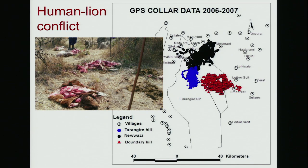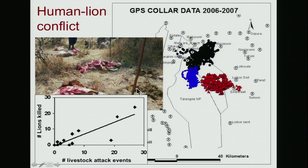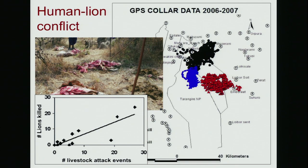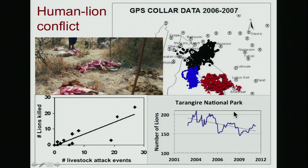When the Maasai lose their livestock to lions, they retaliate. Around Tarangiri, in some villages, lions have attacked livestock up to 30 times and nearly 30 lions were killed in retaliation. Where the lions kill more livestock, more lions are killed in retaliation. This edge effect is very profoundly important for the health of the lion population. Studies in the park show the population has been declining over the last 10 years and has dropped by about 25% because of these retaliatory killings.